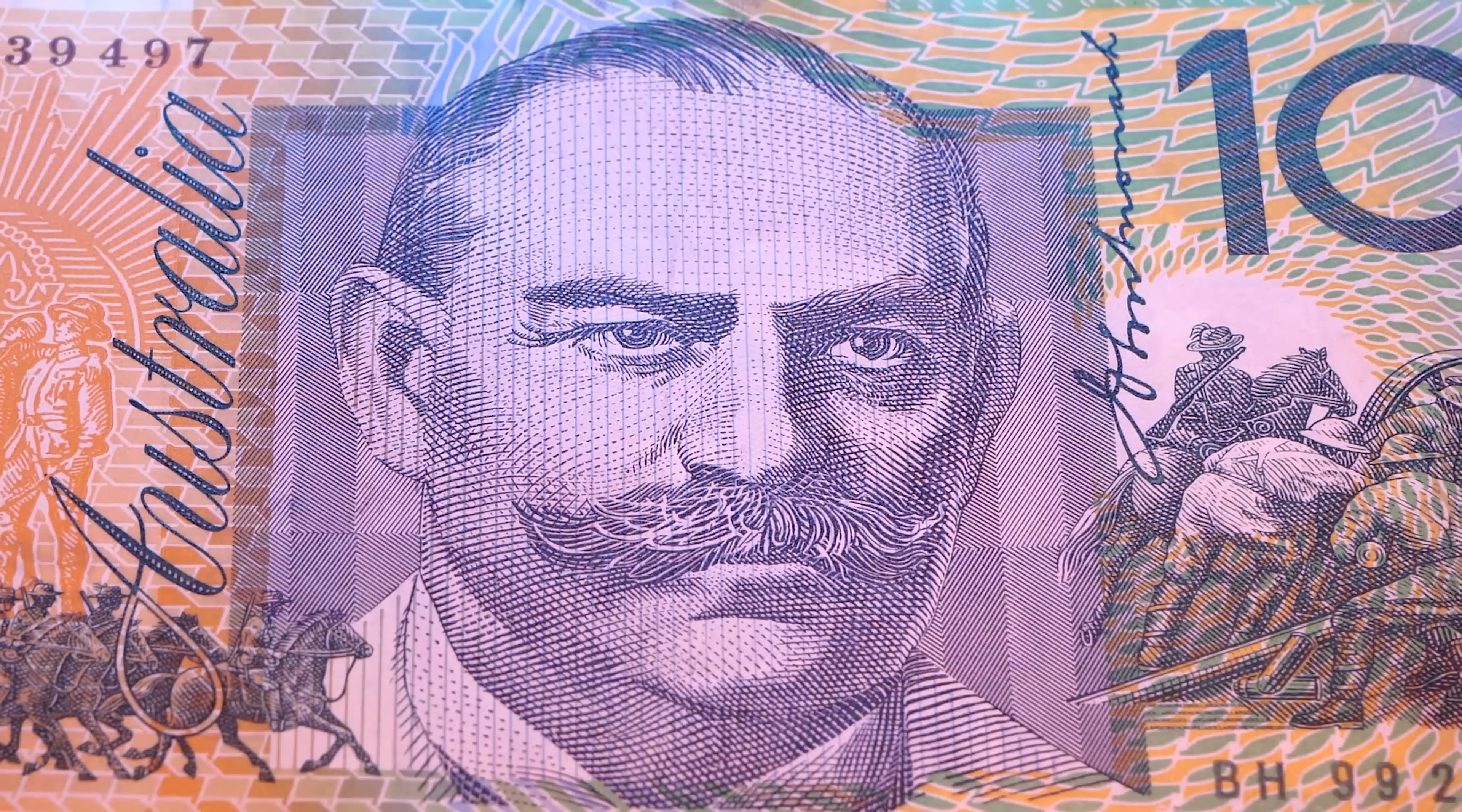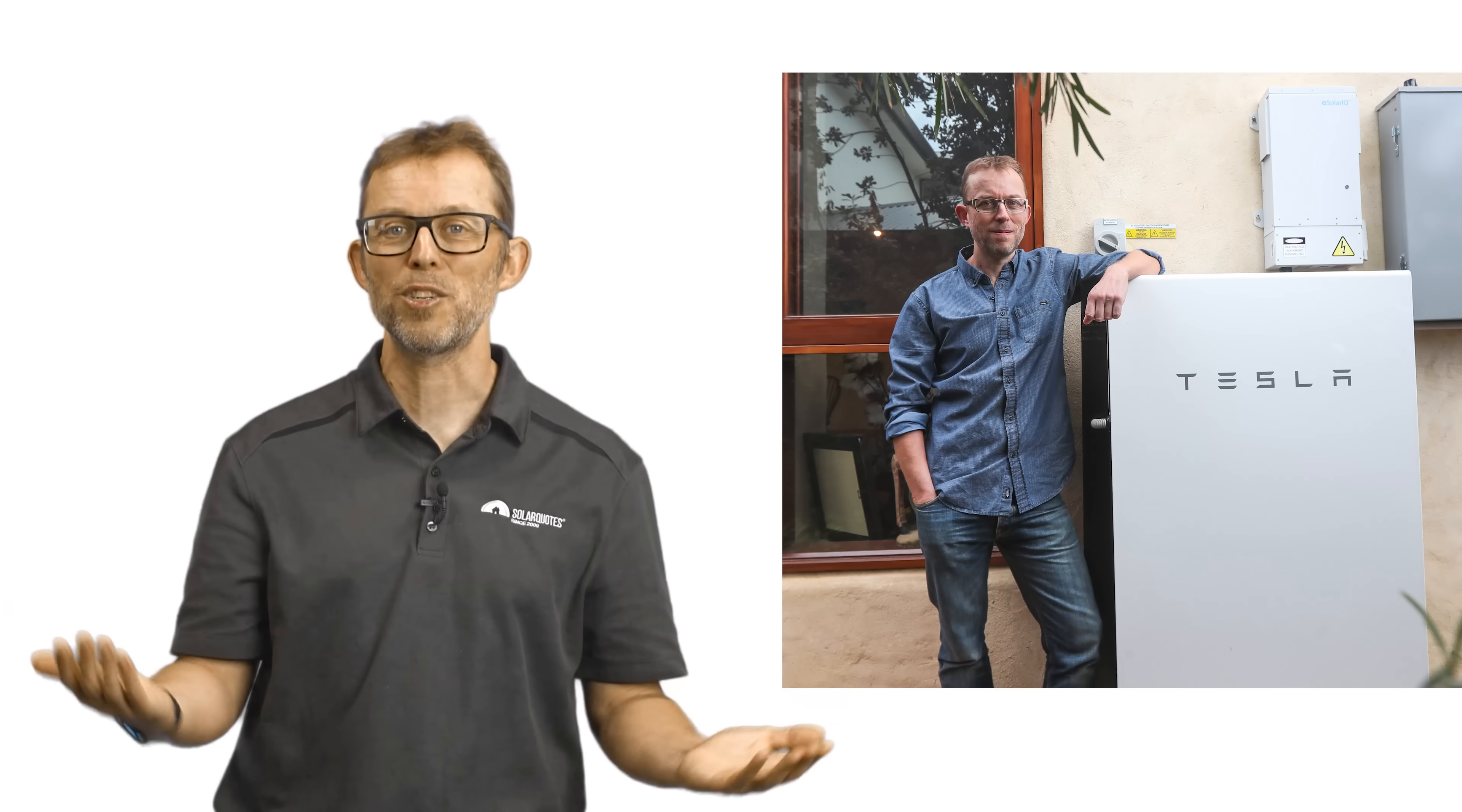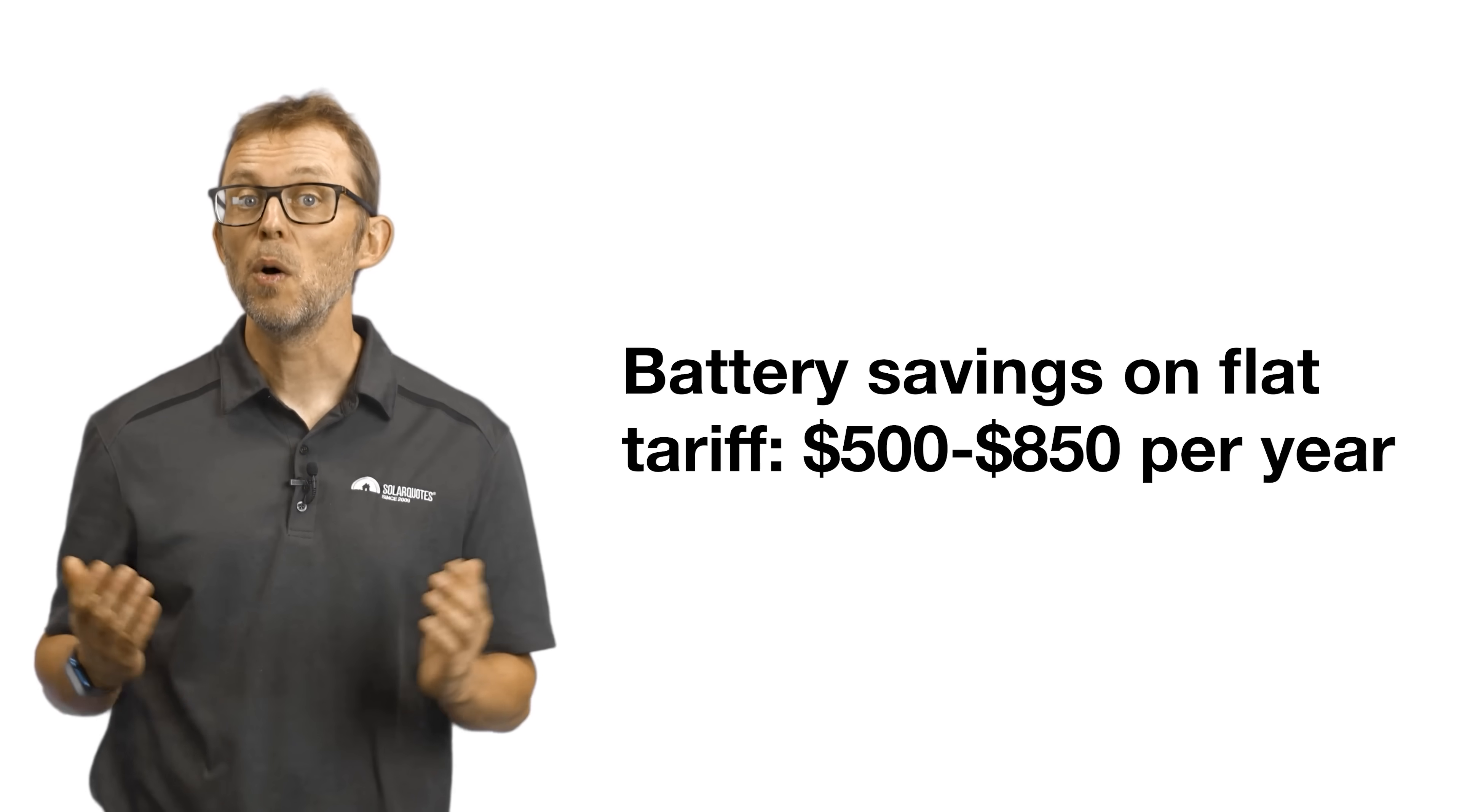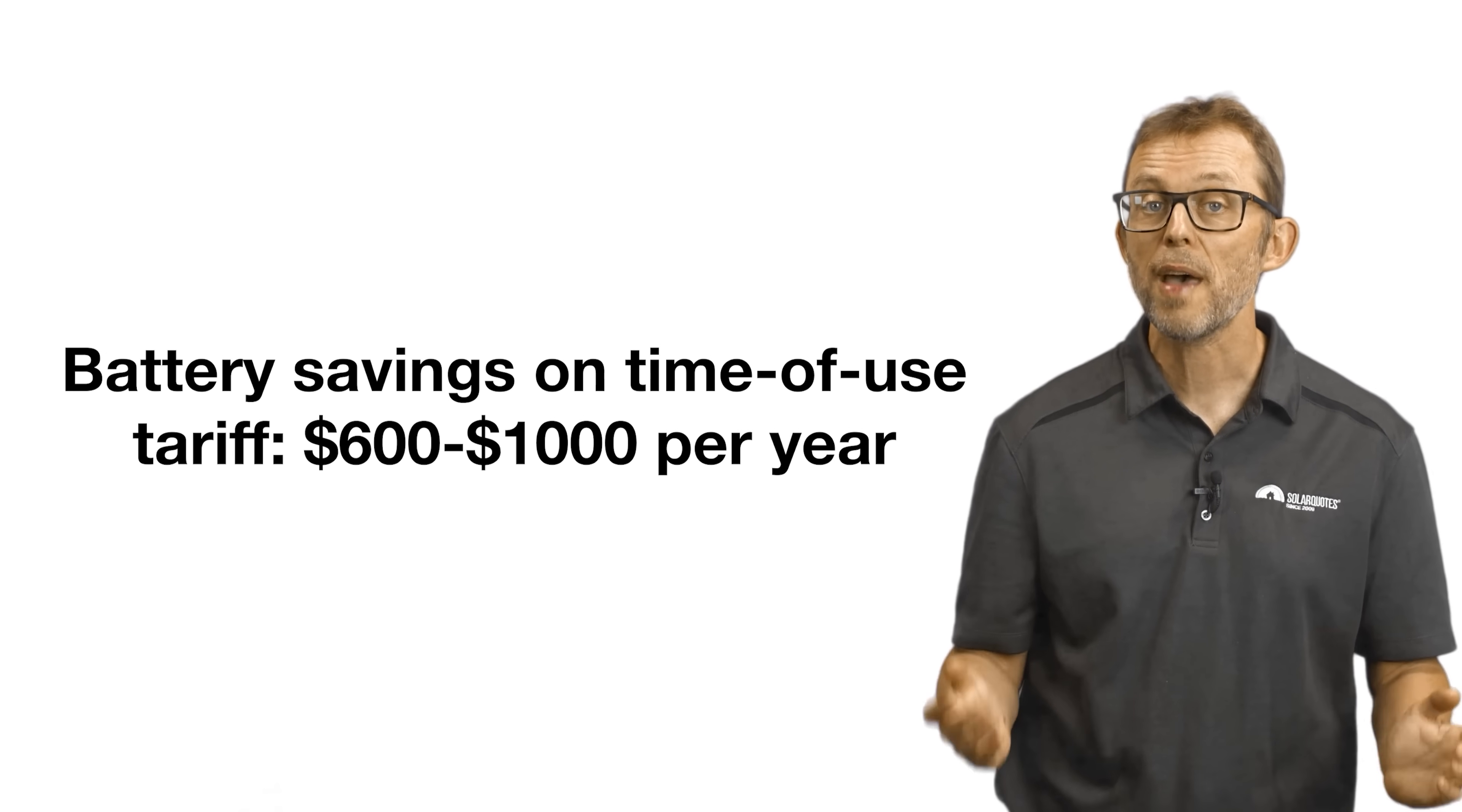Reason number three, economics. Being honest about the economics of batteries leads people to accuse me of being anti-battery. On the contrary, I love batteries. I have one on my own home. I simply don't like how some dishonest companies sell them. Their savings are often wildly exaggerated and miscalculated. Here are some ballpark numbers. A typical home battery on a standard tariff with enough solar to charge it reliably through winter will save between about $500 and $850 per year. If you are forced to be on a time of use tariff, the savings can be from about $600 to $1,000 a year.